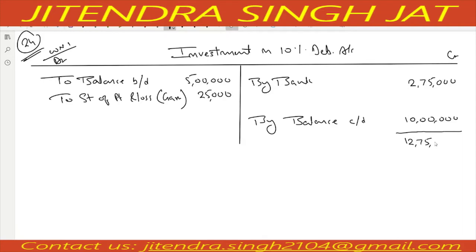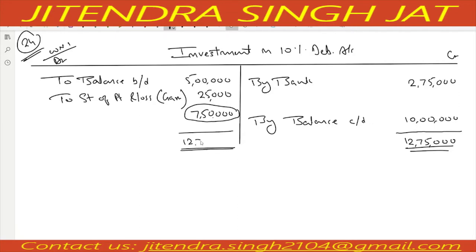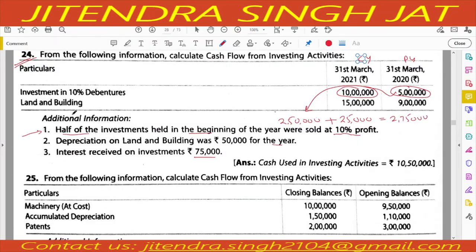12 lakh 75,000 minus 5 lakh 25,000 equals 7 lakh 50,000 remaining on the debit side. If the balance remains on the debit side, it is purchase of investment. So we write: to bank — purchase of investment: 7 lakh 50,000. Now we need to prepare one more account — land and building account.